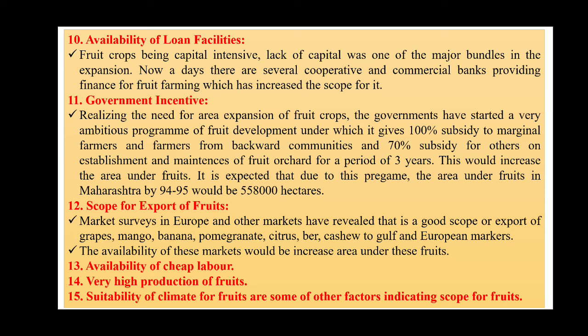Finally, availability of cheap labor — due to the large population in the country, cheap labor is available. High production potential and suitability of diverse climatic conditions for fruits are other factors indicating scope, as India has varied climatic conditions in which one or another horticultural crop can be grown.